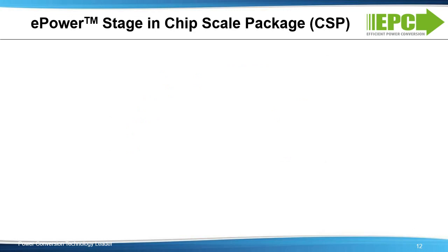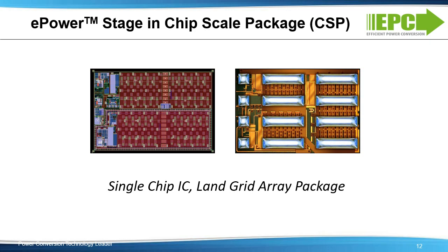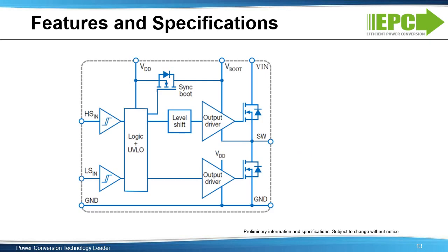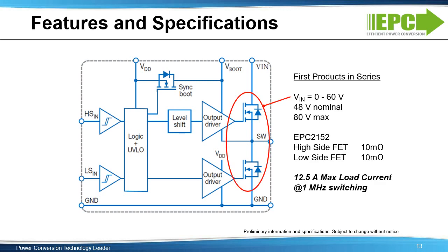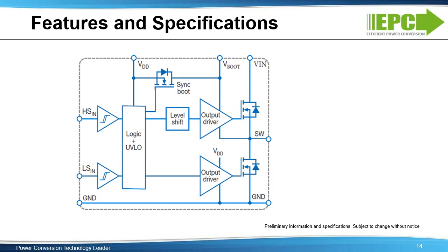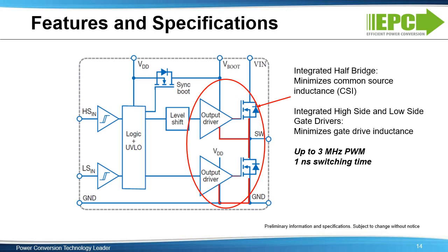The EPC-2152 is packaged using a wafer-level chip scale package in an LGA, or land grid array, outline. The layout of the solder bumps is designed with current flow direction in mind to minimize power loop inductance in practical PCB applications. The first product in the series, the EPC-2152, can operate from 80 volts maximum with a rated output current of 12.5 amperes at operating PWM frequencies exceeding 2 megahertz. The output devices are configured as a half-bridge with RDS(on) less than 10 milliohms for both high-side and low-side FETs. The integrated half-bridge minimizes common source inductance and the integrated gate drive circuit is designed to match the output FETs, minimizing gate drive inductance. This enables one nanosecond switching times and operation up to 3 megahertz PWM.